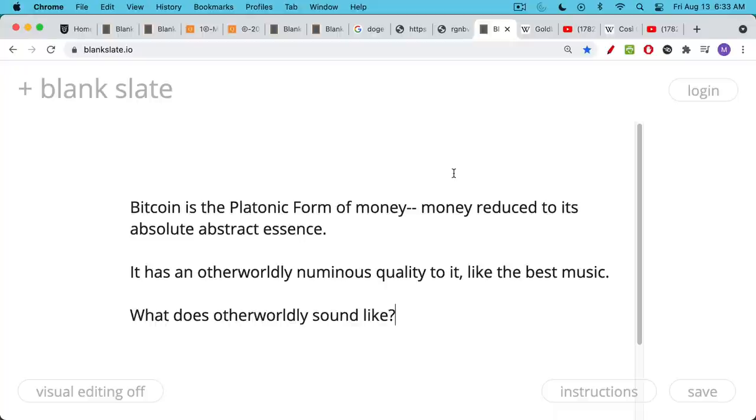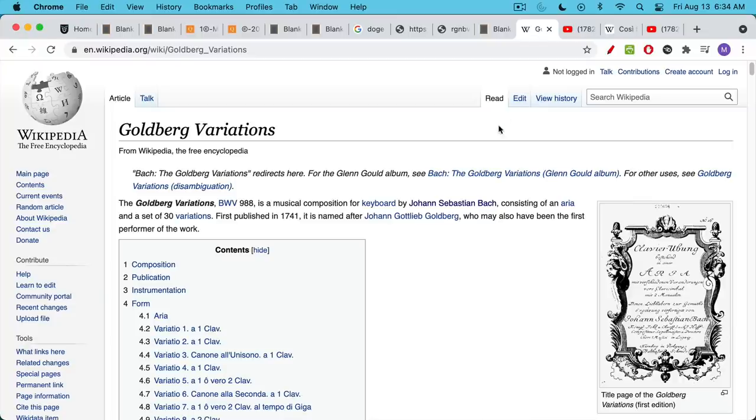As I said, Bitcoin has this otherworldly, numinous quality to it, like the best music. And I want to end this video today. It's going to be a very short video. But I want to end it with two examples of two of my favorite pieces of music. I think the sort of timeless, otherworldly quality that they have is something that I associate with Bitcoin and I associate with the greatest creations and inventions of humanity. Bitcoin is really in this category of timeless, otherworldly music.